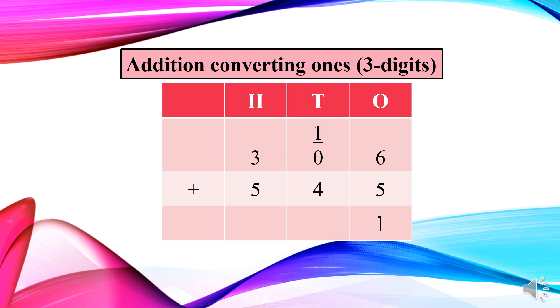So from that number eleven, we will write one which is having the value of once at once place. And the other number which is having the value of tens will be converted to tens place. Right?